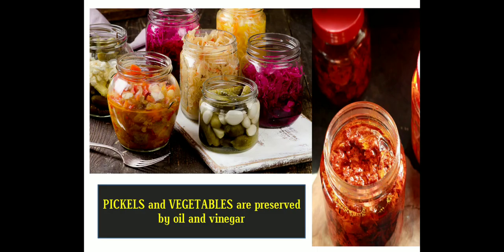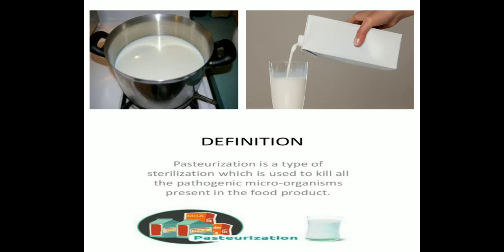Next is the method of preservation by oil and vinegar. As you can see, bottles filled with vinegar and some with oils are used to prevent spoilage of pickles, because bacteria cannot live in such an environment. Vegetables, fruits, fish, and meat are sometimes preserved by this method.